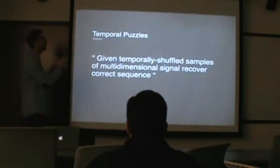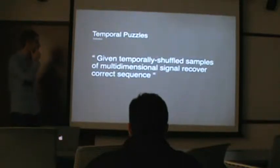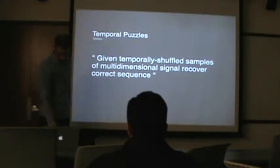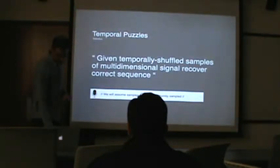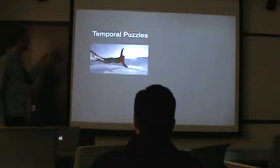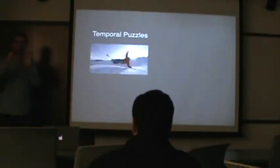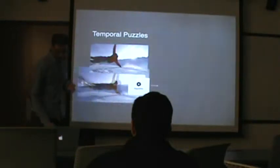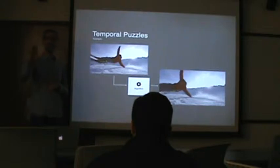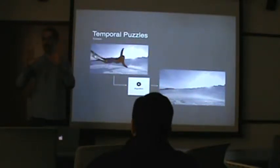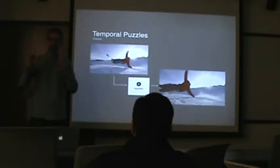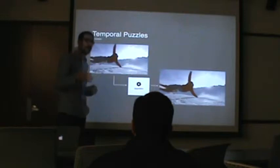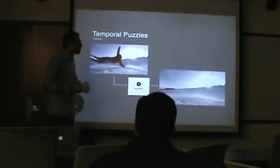Temporal puzzles are: given temporally shuffled samples of a multi-dimensional signal, recover the correct sequence. We'll assume samples are almost uniformly sampled over time. For example, this video — you can see its temporal order is messed up. The question we're going to answer is: we'll devise an algorithm that, hopefully, gives you something meaningful. I want you to take a second — how would you solve this? I believe my approach will be very similar to what you're thinking right now, and there are many possible solutions.